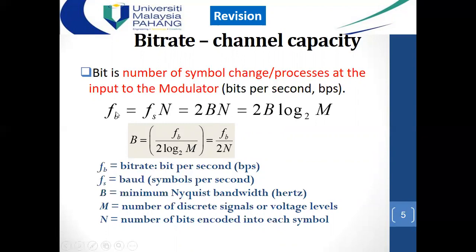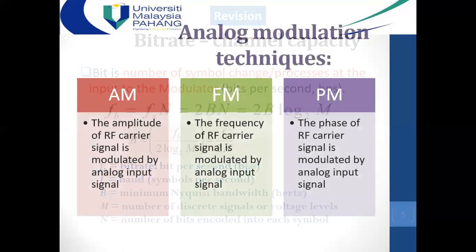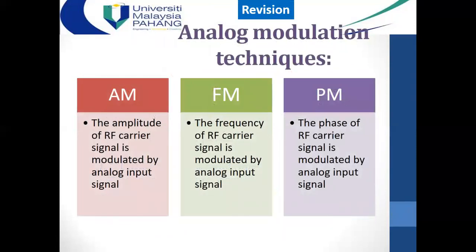From this, we can find the information bandwidth: fm or B = fb divided by 2·log₂(M), or fb divided by 2n. That is how we calculate the information signal bandwidth. Now a brief revision: analog modulation and binary modulation are similar but not the same.